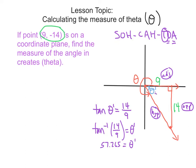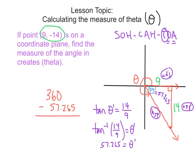So theta prime is 57.265 degrees. Now we can find the measure of theta. Think about it: if this ray were brought all the way around back to where it started, that would be 360 degrees — but instead it stops here, which is 57.265 degrees short of 360. So we take 360 minus 57.265, and we get 302.735 degrees. That is the measure of theta.